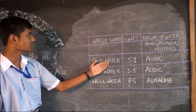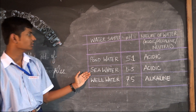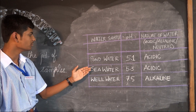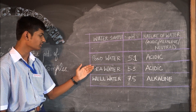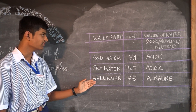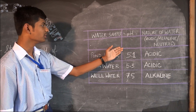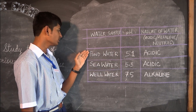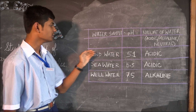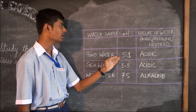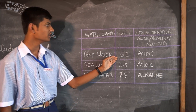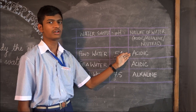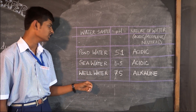Here is the observation table. The first column is of water sample — pond water, sea water, and well water. The second column is of pH value. If we take pond water, the pH value is 5.1, and the nature of the water is acidic since it is less than 7.